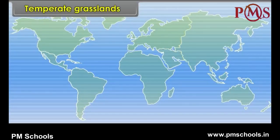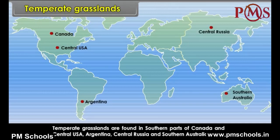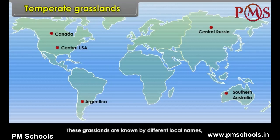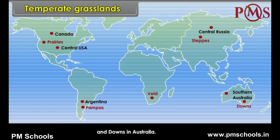Temperate Grasslands. Temperate grasslands are found in southern parts of Canada and Central USA, Argentina, Central Russia and Southern Australia. These grasslands are known by different local names such as Prairies in North America, Pampas in Argentina, Veld in South Africa, Steppes in Russia and Downs in Australia.